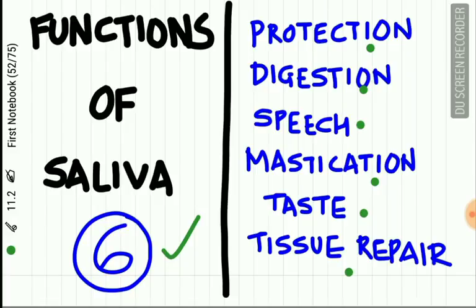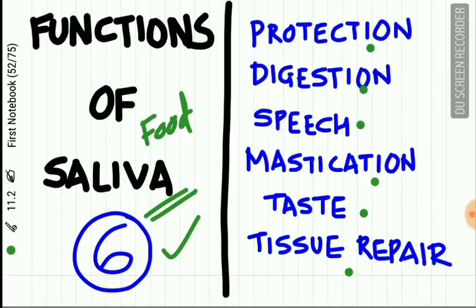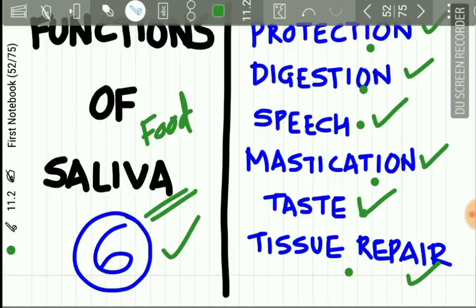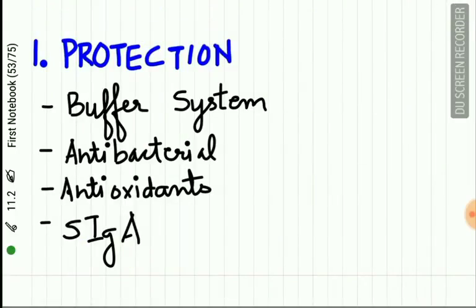A mnemonic to remember these functions: 'Papa decided to spend money on tasty treat' — Protection, Digestion, Speech, Mastication, Taste, Tissue repair.